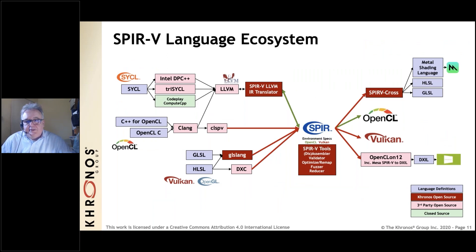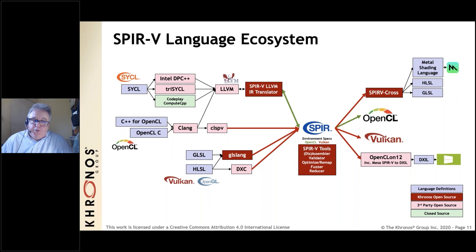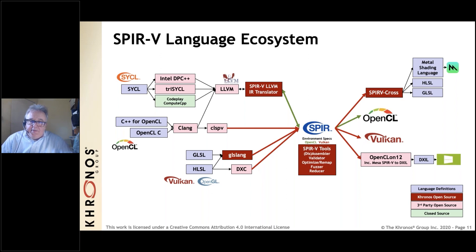Khronos' SPIR-V is at the center of this growing ecosystem of open source kernel language compilers, including Clang and LLVM, which can generate SPIR-V kernels for direct ingestion by OpenCL or Vulkan, or for further translation into shaders to run on other APIs such as Metal — enabling OpenCL applications on Apple platforms without needing OpenCL drivers. Microsoft's OpenCL on DX12 project also translates LLVM-generated SPIR-V kernels using a Mesa open source conversion pipeline to DXIL, the DirectX intermediate language for execution on DX12. Enabling language compilers to innovate independently from runtimes was the primary dream behind SPIR-V.